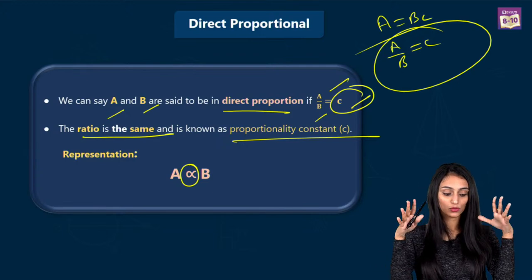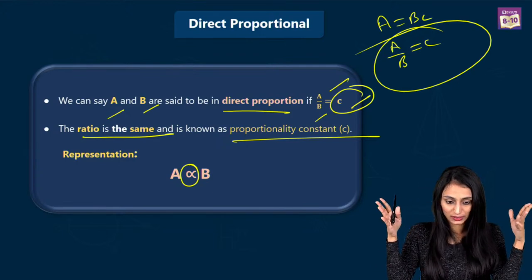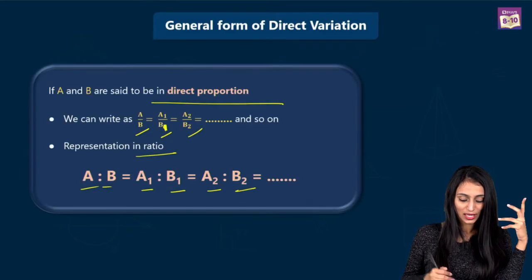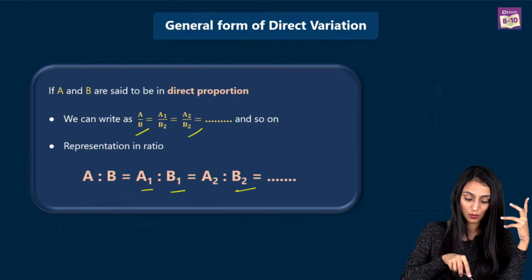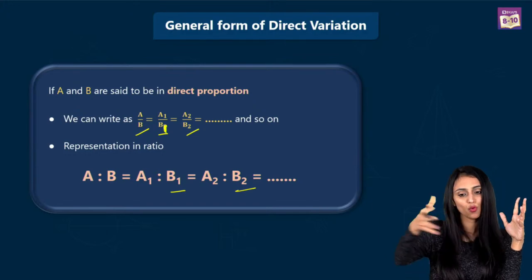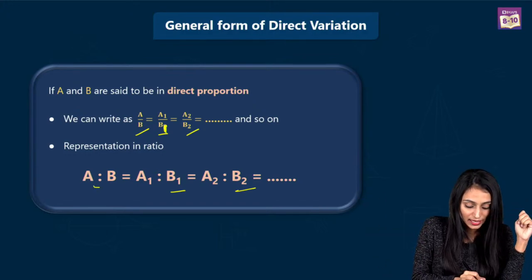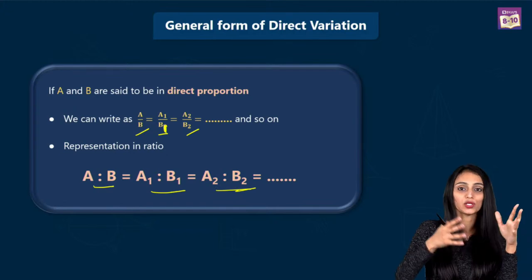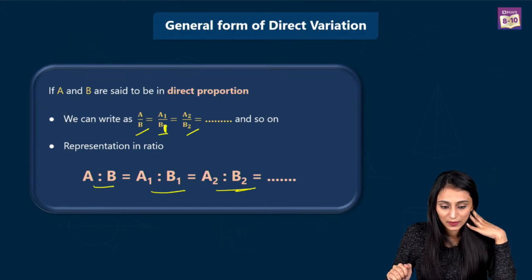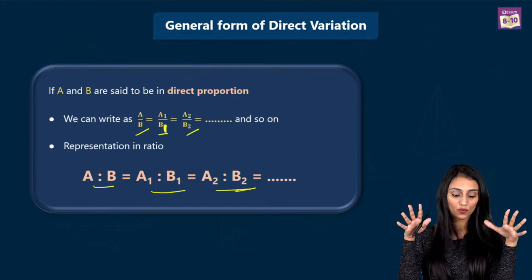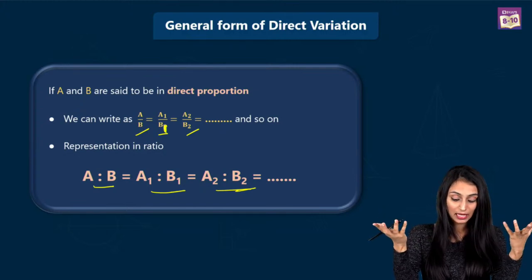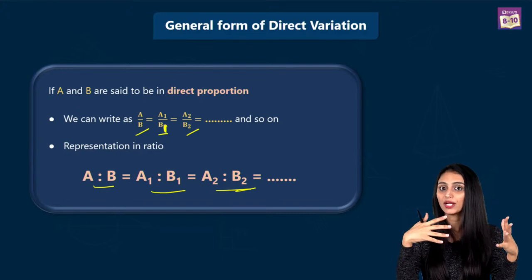Everyone has understood how to denote quantities when they are in direct proportion. Let's take a quick look at the general form of direct variation. A and B would be in direct proportion, then we write A by B equal to A1 by B1, A2 by B2 and so on. And A is to B equals A1 is to B1 equals A2 is to B2 — ratio is the same. We have understood what direct variation is and how we actually represent it. Now let's try out some questions for better understanding.